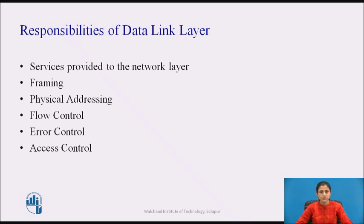The second function is framing, where the data link layer divides the stream of bits received from the network layer into manageable data units called frames. The next function is physical addressing. If frames are to be distributed to different systems on the network, the data link layer adds a header to the frame to define the sender and receiver. If the frame is intended for a system outside the sender's network, the receiver's address is the address of the connecting device that connects the network to the next one.